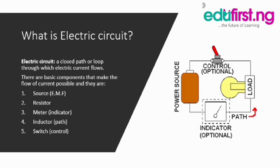From there, we move on to electric circuits. What is an electric circuit? It is a closed path or loop through which electric current flows. There are basic components that make the flow of electric current possible: one, source, which is the battery; two, resistor, which is a component that resists the flow of electric current; three, meter, which is an indicator to measure the flow of current; four, inductor, which is the path through which current flows; and five, switch, which is the control of the circuit.